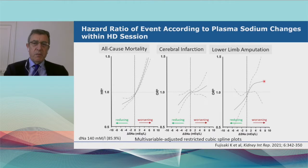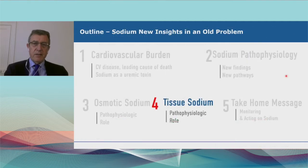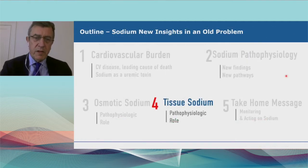The Japanese study also showed that if you try to correct hyponatremia by increasing the dialysate-to-plasma sodium gradient, you tremendously increase the risk of cerebral infarction and lower limb amputation. So correcting hyponatremia simply by acting on the dialysate sodium concentration could be a risky process.